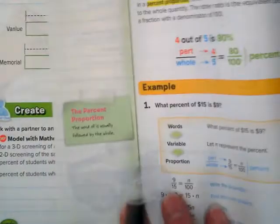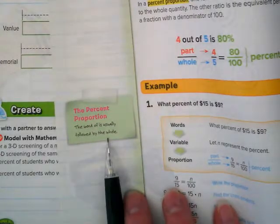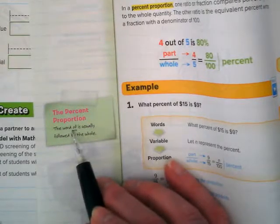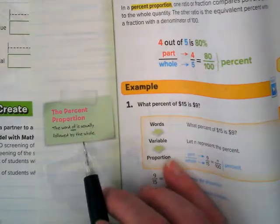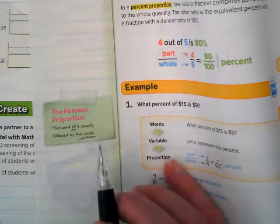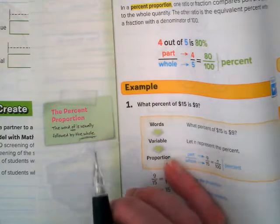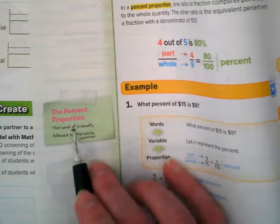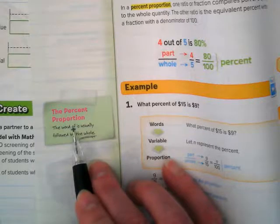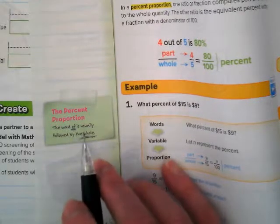Okay, something I want to point out over here in the side margin. Do you guys see this little tag there? The percent proportion. The word 'of' is usually followed by the whole, and that's really important as we are setting these up because we're taking it from a word sentence and we're setting it up as a proportion. So if you see 'of,' you need to think that what's next is going to probably be the whole. Keeping that in mind as we go through the examples.